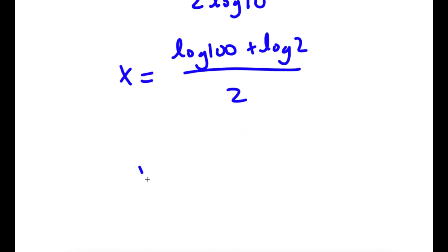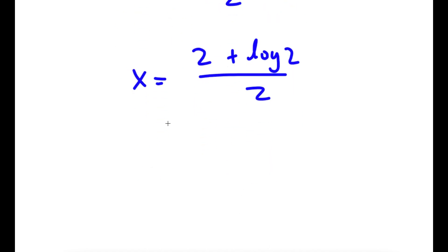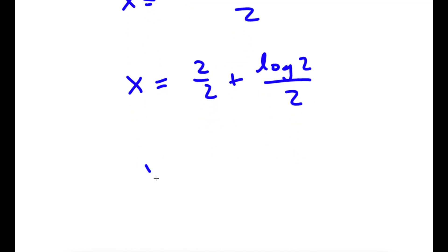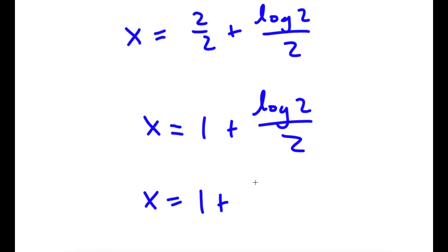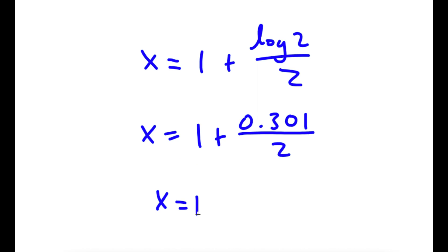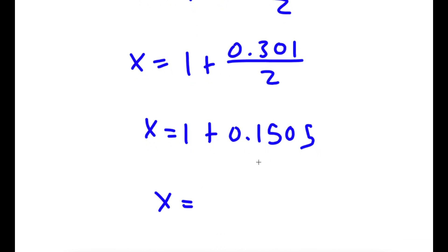We have log 100 again, which equals 2. So I have 2 plus log 2 over 2, which is the same as 2 over 2 plus log 2 over 2. Since 2 over 2 is 1, I have 1 plus log 2 over 2. Using a calculator, log 2 is approximately 0.301, and dividing by 2 gives 0.1505. So x equals 1 plus 0.1505, which is approximately 1.1505.